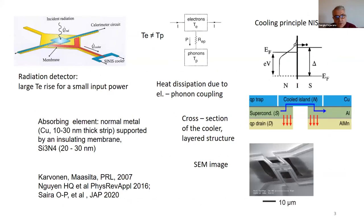Here you see an outline of a device, which is a radiation detector, a bolometer. It contains the absorbing element, which is a normal metal strip, in this case copper, which is supported by an insulating membrane of silicon nitride and altogether a range of dozens or even hundreds of nanometers.